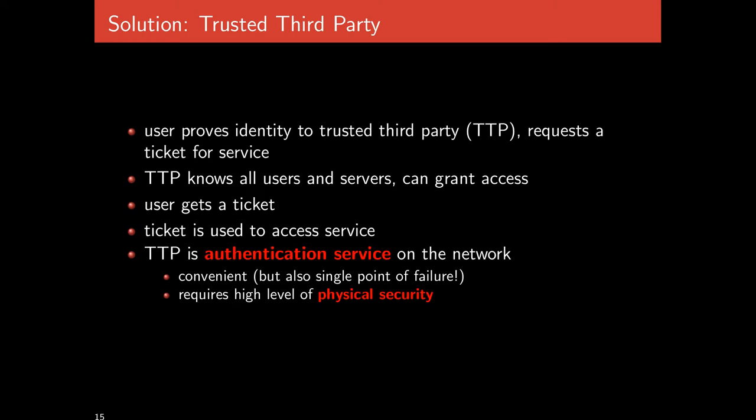It provides evidence in the form of tickets that whoever holds this ticket is allowed to print. This is a single point of failure, which means the machine running Kerberos needs high physical security — in a locked room, with limited key access and cameras. A lot of trust is placed in this trusted third party, which manages every user's ability to authenticate with services.